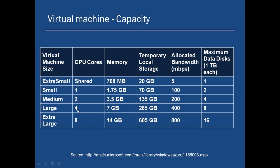You cannot say I want a 4 CPU core machine with 3.5 GB RAM — that is not supported right now. If you choose a medium virtual machine as a size, you get a 2 CPU core machine with 3.5 GB RAM, and for temporary storage you get around 135 GB of space. You can also add 4 more data disks, and each of them can range from 1 GB to a maximum of 1 TB, so you can have 4 disks of 1 TB each as the maximum capacity.